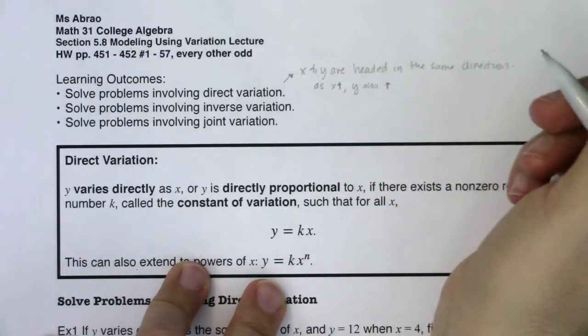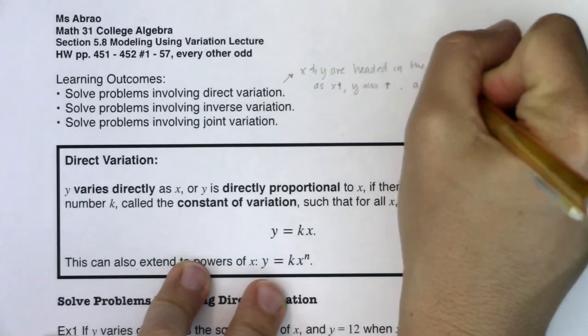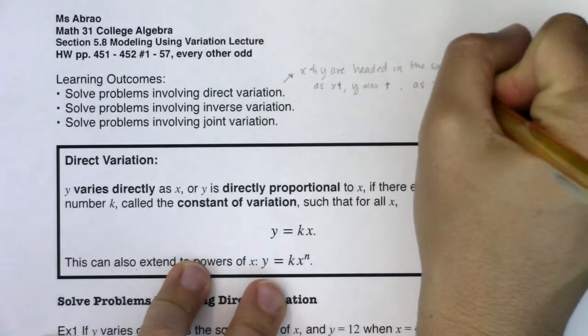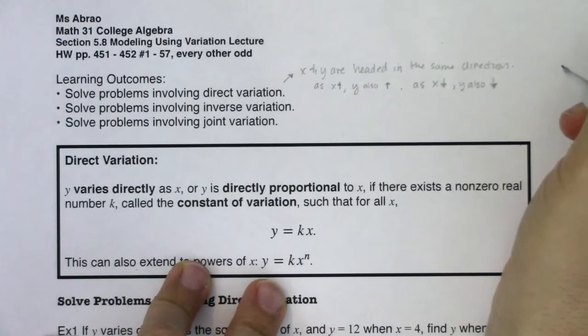Or on the flip of that, if x is going down, y is also going down. So they're either both heading up or both heading down. They're headed in the same direction.